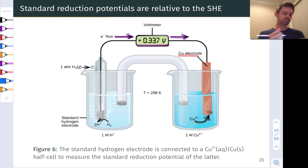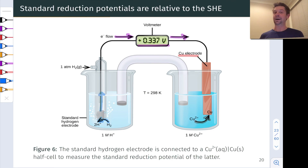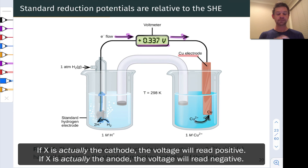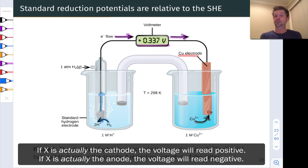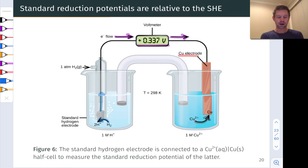And oxidation is occurring in the SHE as H₂ is converted into 2H⁺, and electrons head up the wire and out that half cell. This is what happens spontaneously when you hook up a copper half cell to the SHE. So the measured voltage is positive since electrons are flowing from the SHE into the half cell of interest, and the energy with which they're flowing is 0.337 volts relative to the standard SHE potential of zero volts.